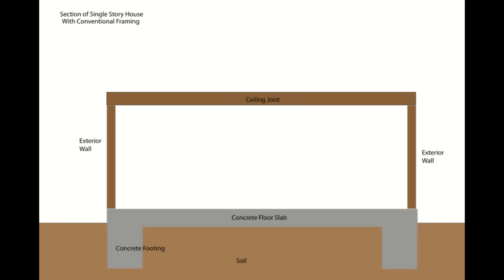Then we have the building slab, which is basically what we'll be putting all of our furniture on, putting the floor on, and of course some of the other walls that are going to be non-bearing. This would be what you'd see if you took a house and sliced it in half — what architects and engineers refer to as a building section.